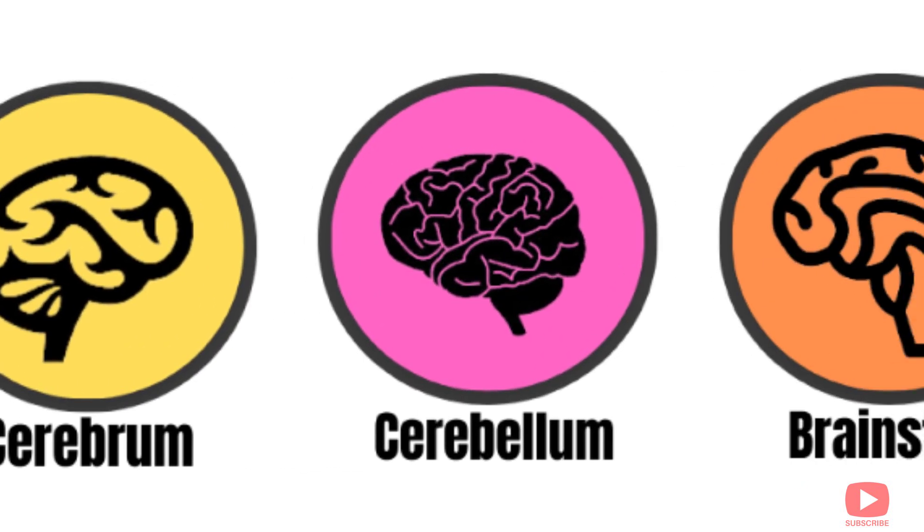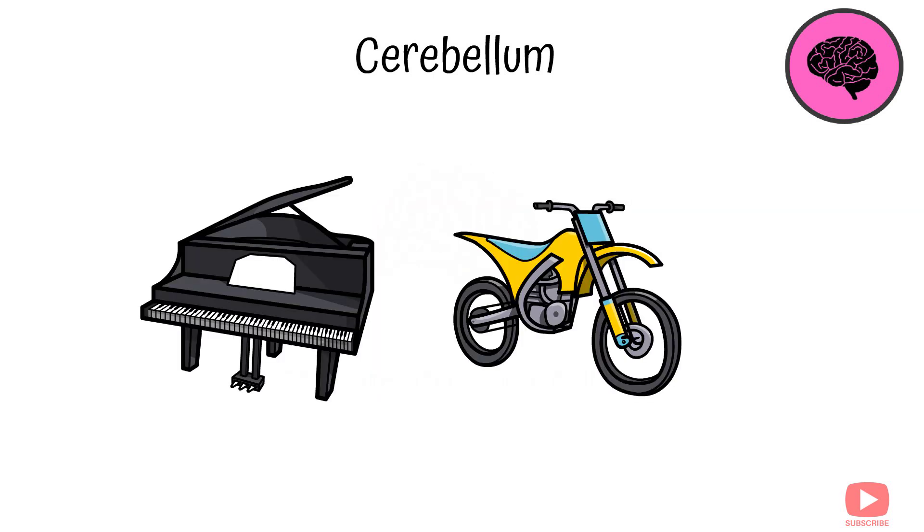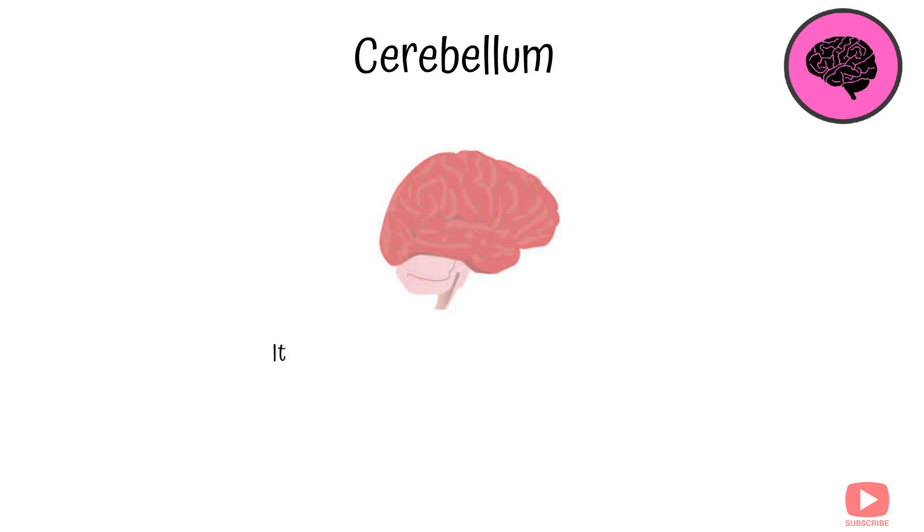Cerebellum. The cerebellum sits under the cerebrum and is essential for coordination and balance. It fine-tunes motor movements, helping with tasks that require precision, like playing an instrument or riding a bike. While small, it ensures smooth and controlled movement.